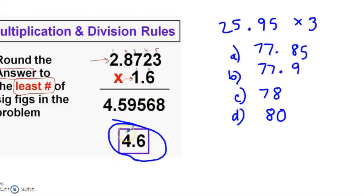The first number is going to be the exact one, and the last number is always the estimated digit. You'll see that 0.59 rounds to 0.6, and that's where the 6 comes from.